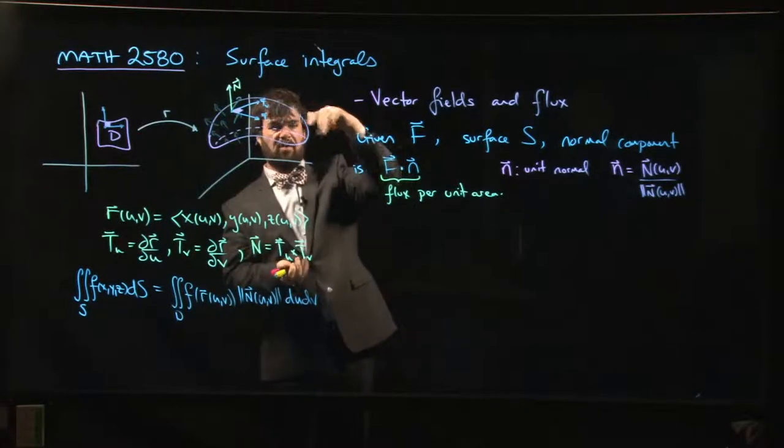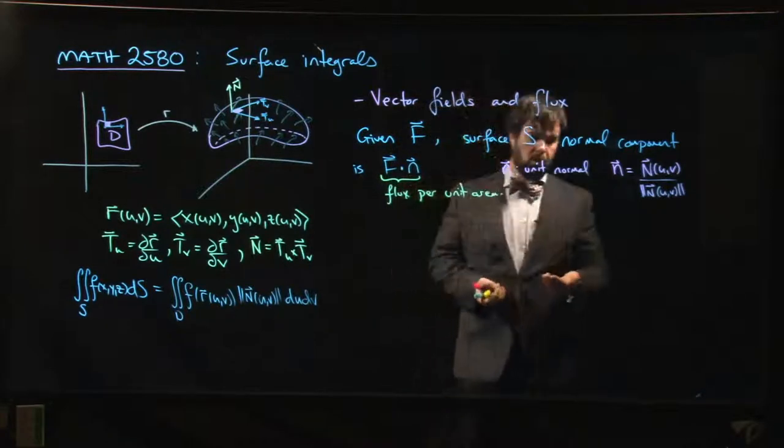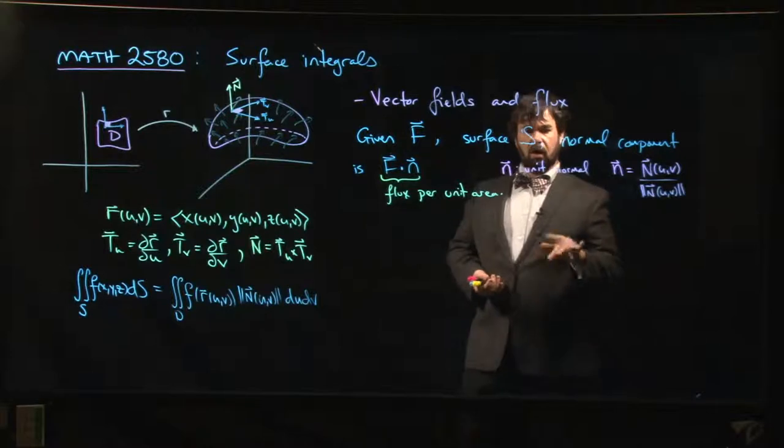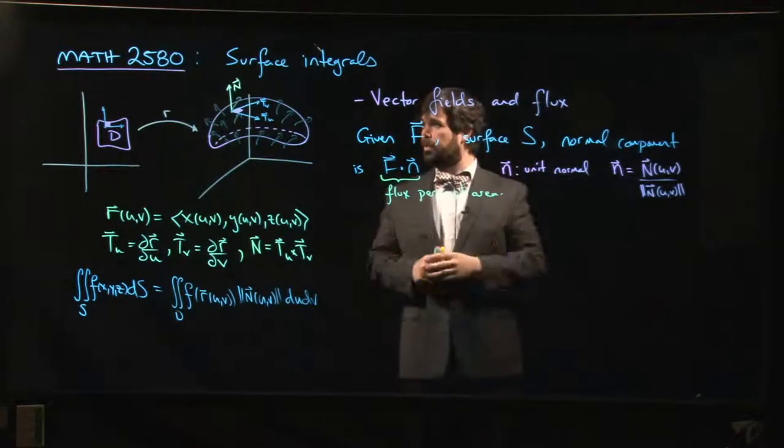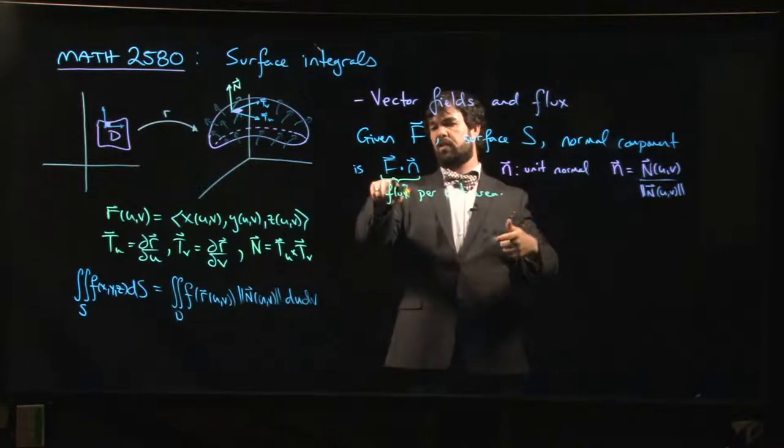There are two possible directions, two possible unit normals: upward pointing and downward pointing in this picture, or maybe left pointing, right pointing, or inward pointing, outward pointing if it's something like a sphere.